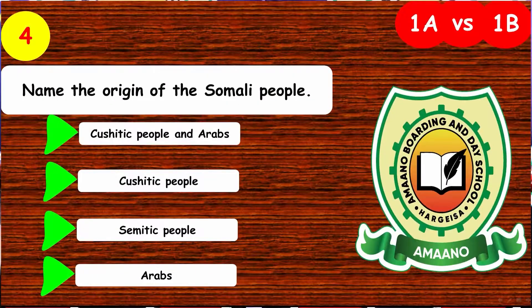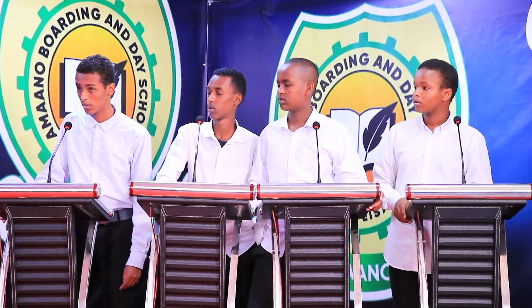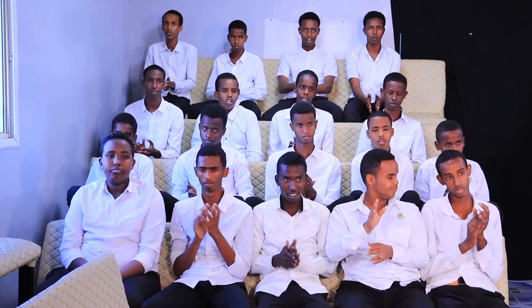This is a history question. Name the origin of the Somali people. A, Kushitic people and Arabs; B, Kushitic people; C, Semitic people; D, Arabs. The answer is Kushitic people and Arabs. That's correct for the boys.